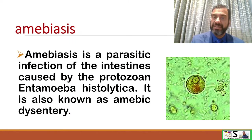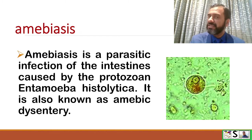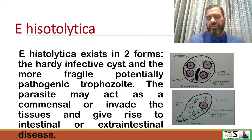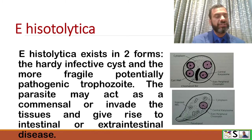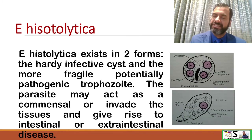What is amoebiasis? Amoebiasis is a parasitic infection of the intestine caused by a protozoa, Entamoeba histolytica or E. histolytica. It is also known as amoebic dysentery. E. histolytica exists in two forms: the hardy infective cyst and the more fragile, potentially pathogenic trophozoite — meaning the cyst is more infective. The parasite may act as a commensal or invade tissue, giving rise to intestinal or extra-intestinal diseases.